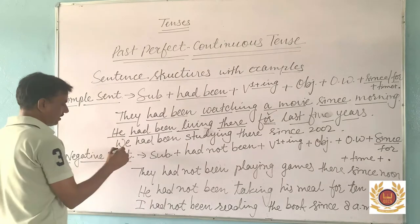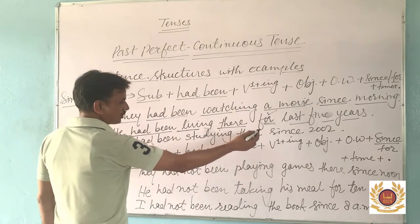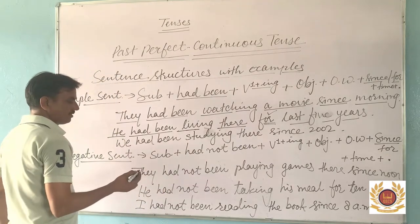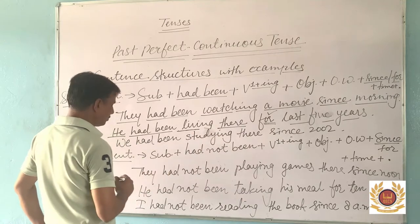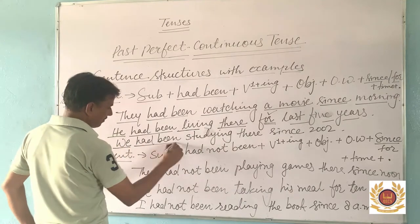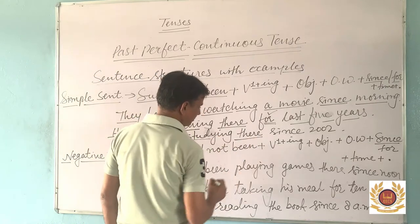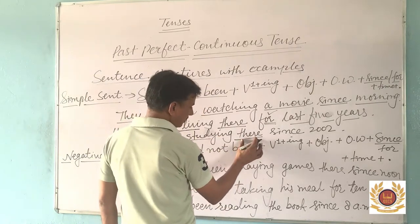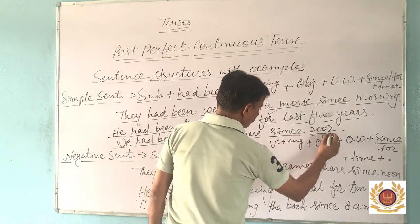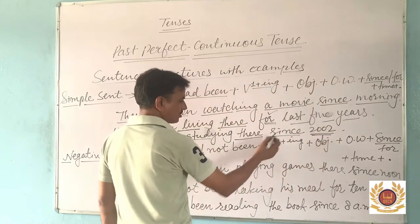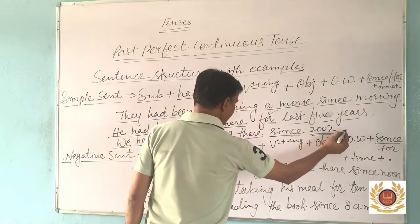Next example: 'We had been studying there since 2002.' In this sentence, the action of studying was going on since 2002. 'We' is the subject, 'had been' is the helping verb, 'studying' is the first form with '-ing', 'there' is another word, there is no object, and 'since' is the adverb because '2002' is a point of time.